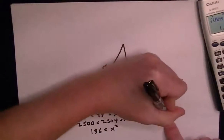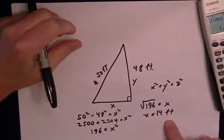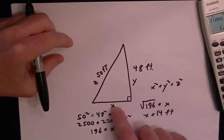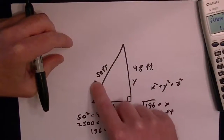So the answer to this one is x is equal to 14 feet, and we just use the Pythagorean theorem. It's this squared plus this squared equals that squared.